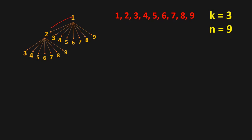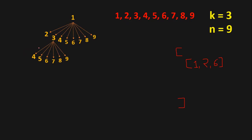We see that 1+2+6 equals 9, so we've found one valid combination — let's add it to our answer list. Then 1+2+7=10, 1+2+8, 1+2+9 all exceed 9. Moving to the pair 1,3: we get 1+3+4=8 and 1+3+5=9, so we've found another combination — let's add 1,3,5 to our answer list.